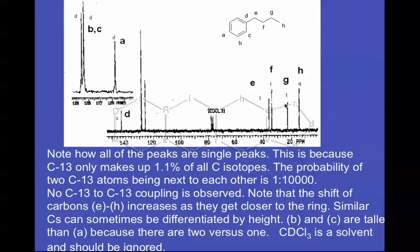Now the other thing that we see is that the closer that a carbon atom is to an electronegative source, or in this case a ring, the more downfield the shift will be. So the E will appear here, the F appears here, the G appears here, and the H appears here. So as we get closer to the ring, the shifts of the peaks will be downfield.